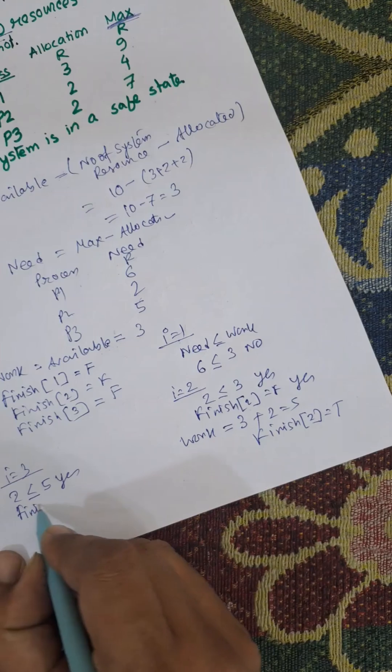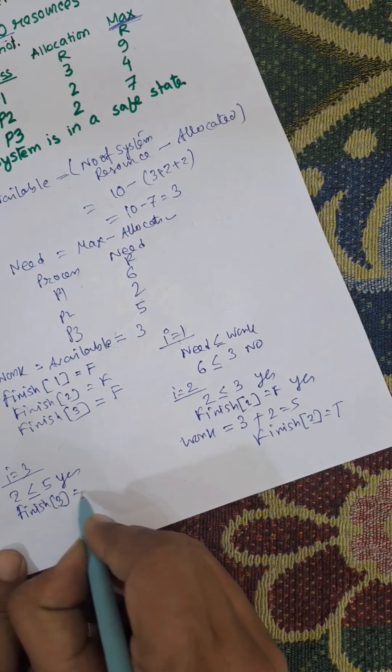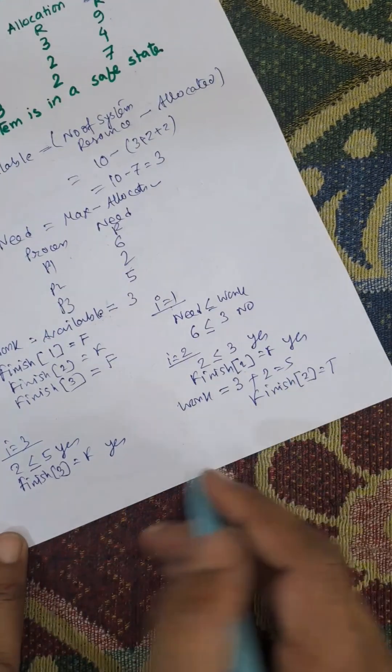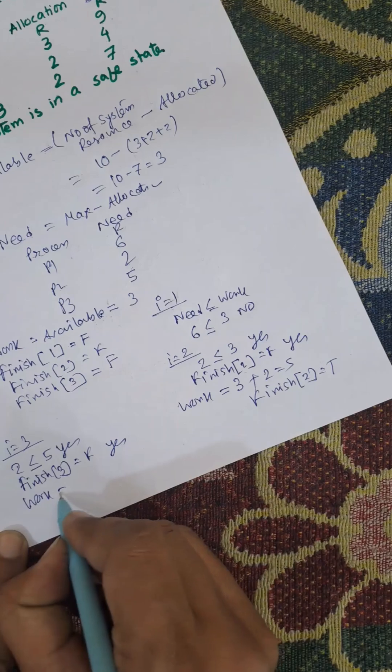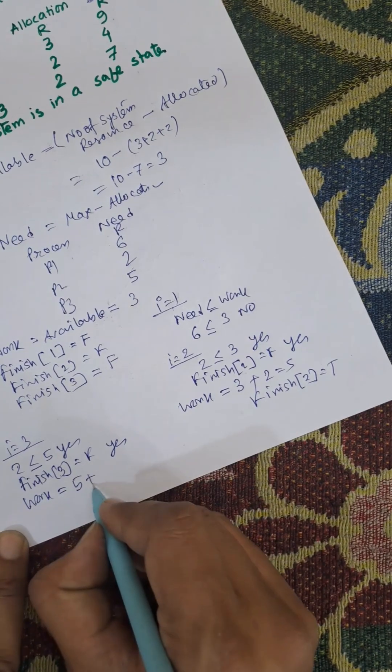Then finish 3 equals false. Yes. Finish 3 is false. So work equals work plus allocation. Work is 5 plus allocation is 2, 7.